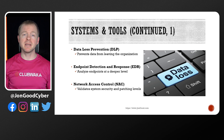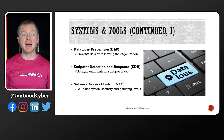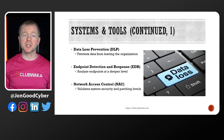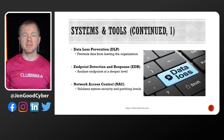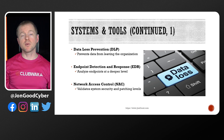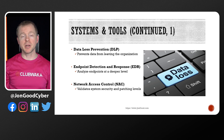Frequently when we talk about DLP, those systems are monitoring email traffic and media, like USB flash drives that you might plug in to take data out of the network. Endpoint detection and response, or EDR, are a newer type of system that's used to analyze endpoints much deeper than we previously could. The idea is to better identify suspicious behavior on systems. Network access control, or NAC, forces systems that are trying to connect to our network to meet a certain level of security — so up-to-date antivirus definitions, up-to-date patches, things like that.